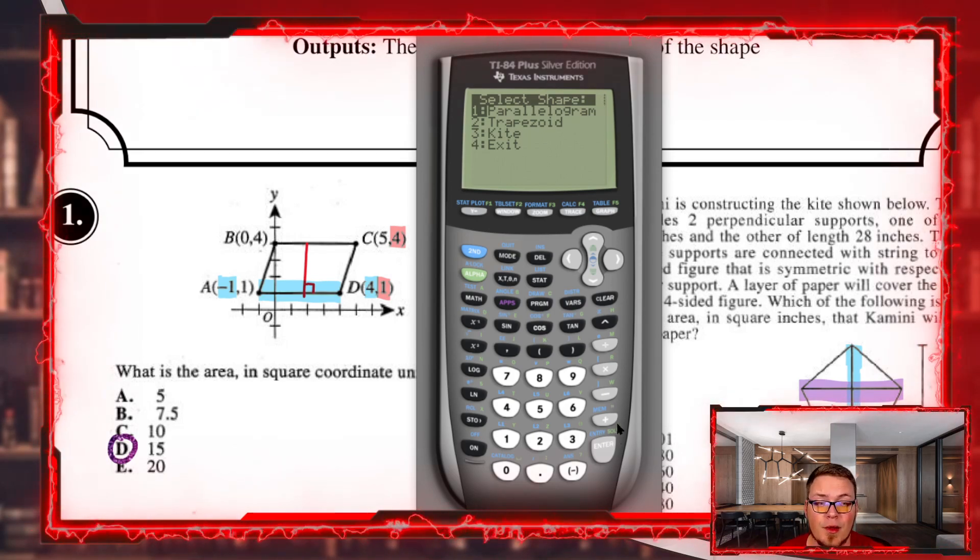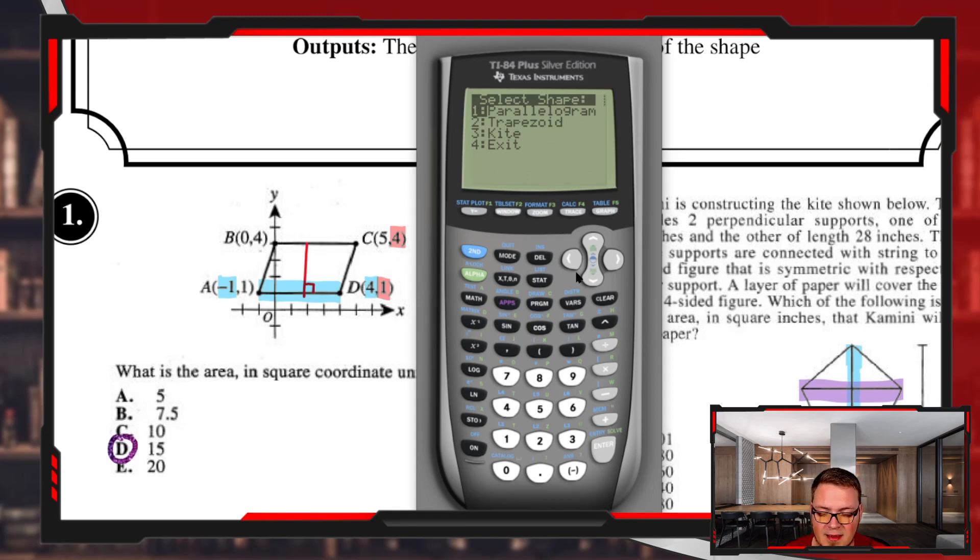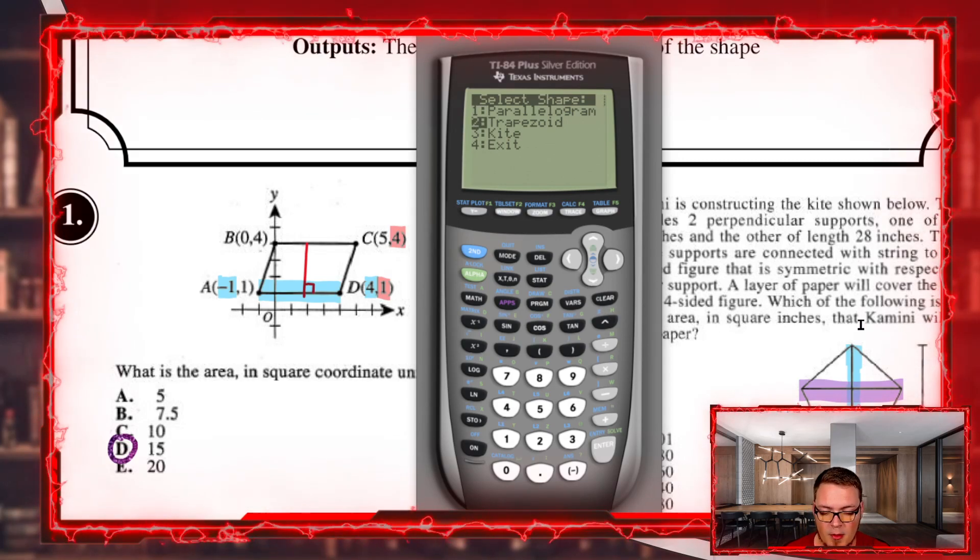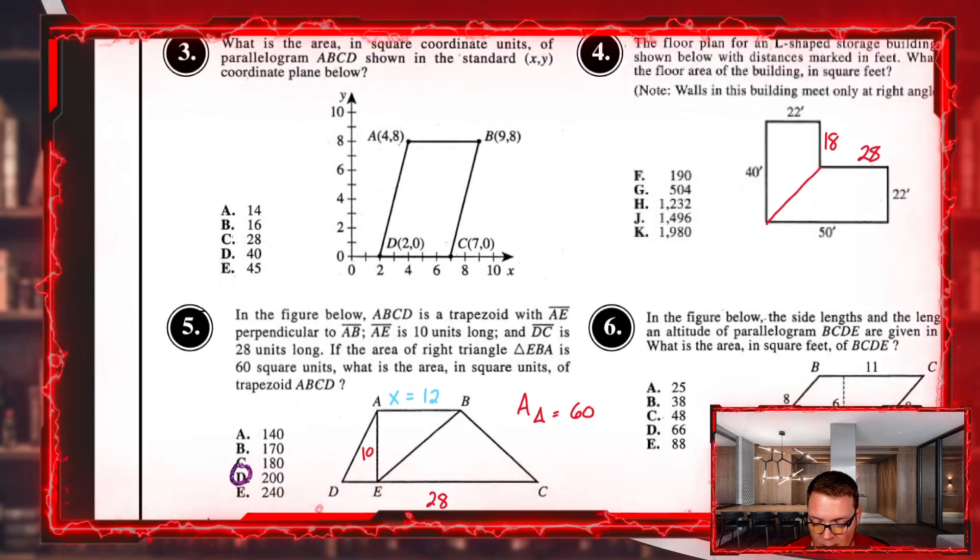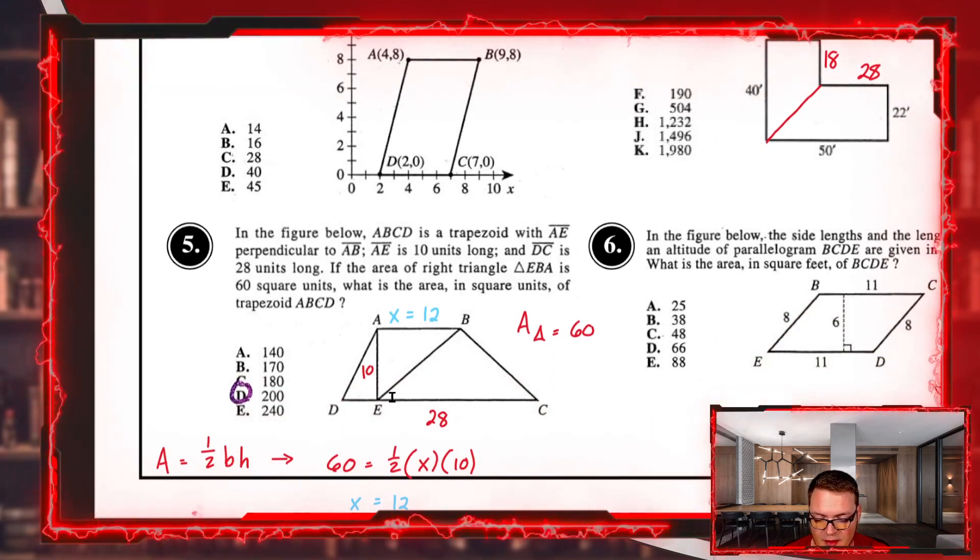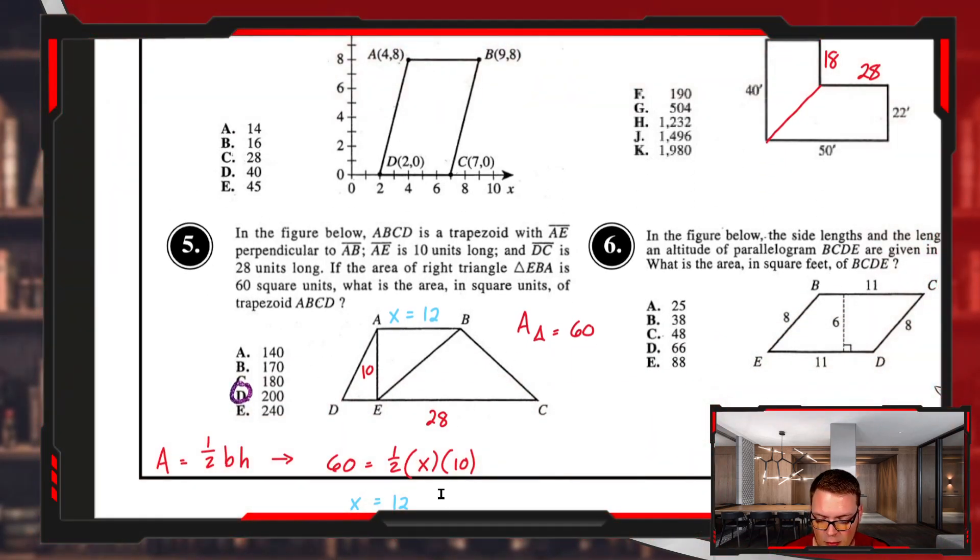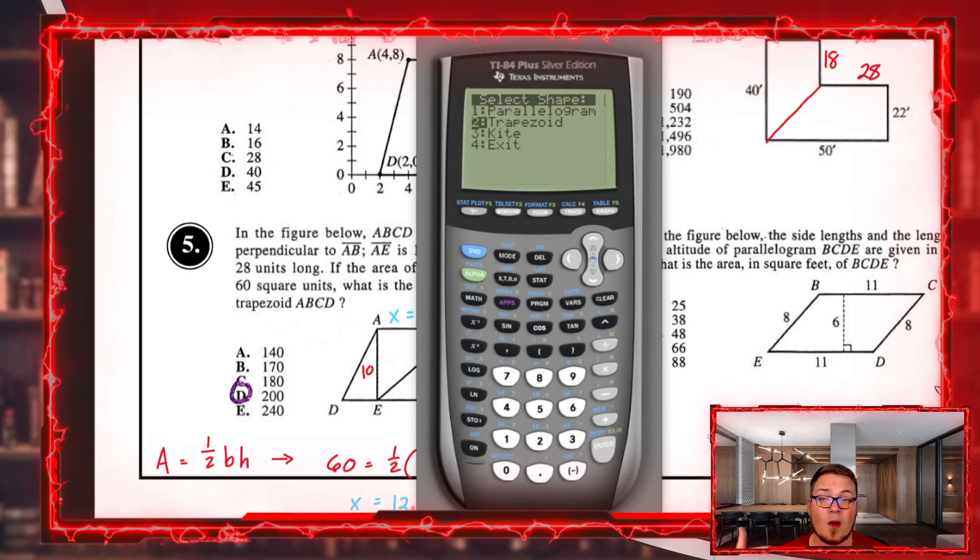Let me show you the other area quad option. The second one is for trapezoids. Remember that a trapezoid has two bases, like question five here.